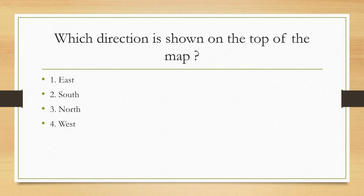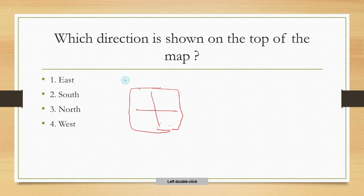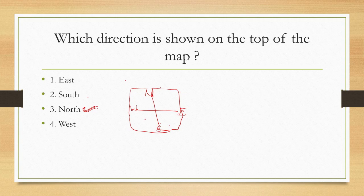Next question: which direction is shown on the top of the map? If you see the map — this is the paper — when you draw the map, directions are shown. He is asking what is shown on the top. The top will be shown as north. Down is south, the right side is east, and the left side is west. The correct answer is north. On the paper, north direction is shown on the top.